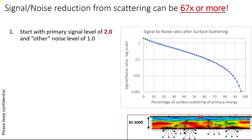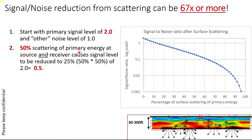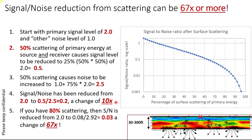Here's an interesting example of how scattering can harm land seismic noise quality so dramatically. If we start off with a primary signal of 2.0 and other noise of 1, let's assume we have 50% scattering of the primary energy. This happens at both source and receiver, causing the signal level to be reduced by 25% and the noise to be increased. Working all that out, 50% scattering reduces your signal to noise level by 10x. We've seen a lot more than 50% scattering — if you have 80% scattering, the signal to noise level is reduced by 67x. This is why scattering is such a big problem with land seismic data, and why we should address it in acquisition and processing.